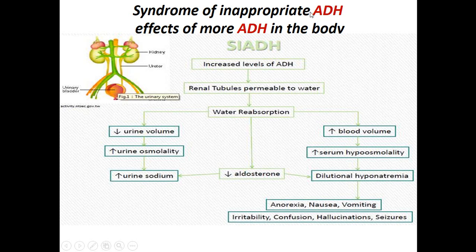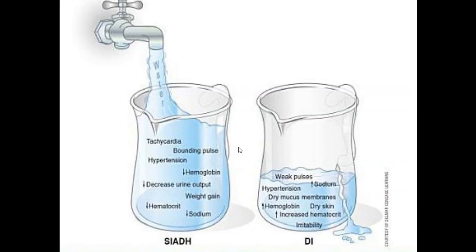When hyponatremia occurs, it causes anorexia, nausea, vomiting, irritability, confusion, hallucinations — where you see or hear things that are not there — and seizures with tremors. So the syndrome of inappropriate secretion of ADH — SIADH — is the term for this condition. The key comparison is: in diabetes insipidus there is less ADH leading to water loss and dilute urine, while in SIADH there is more ADH leading to water retention and symptoms of dilutional hyponatremia.